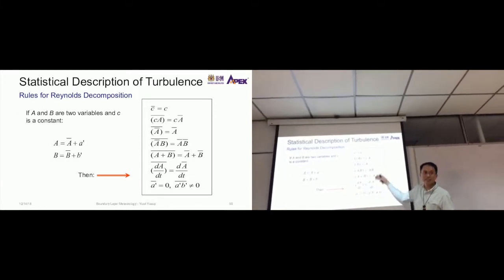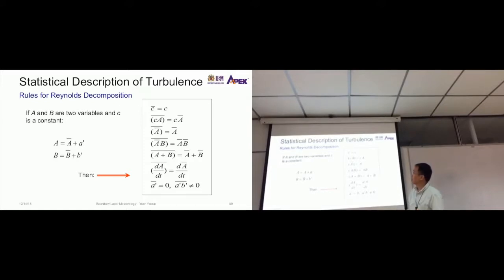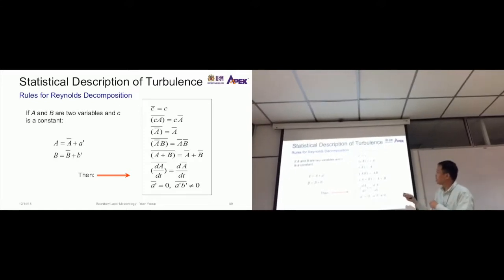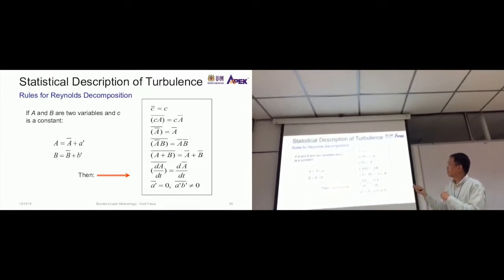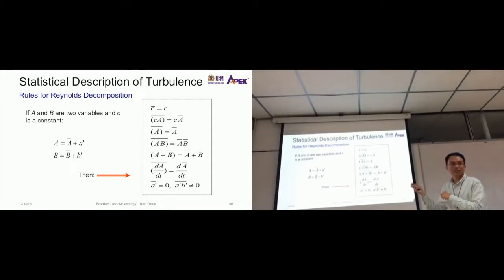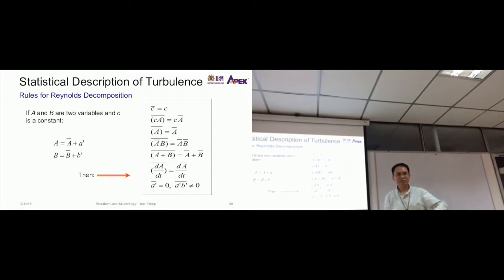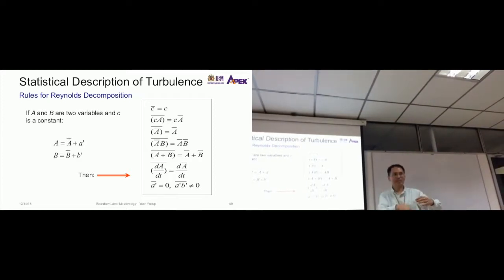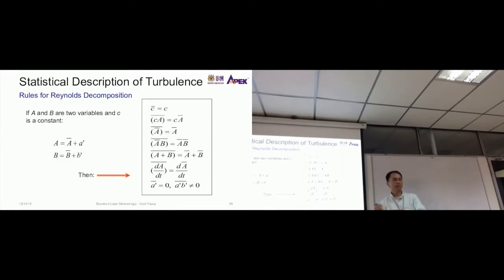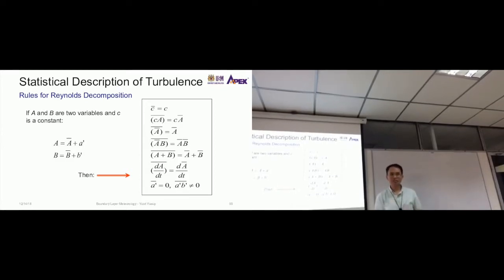If you average a constant, you should get the constant because it's the same all the time. So 10 plus 10 plus 10 plus 7 divided by how many there are—the value is the same. This applies, so if it's a constant, using this rule doesn't change it. It's still constant. That's what it means.